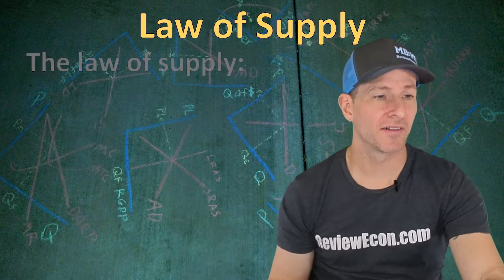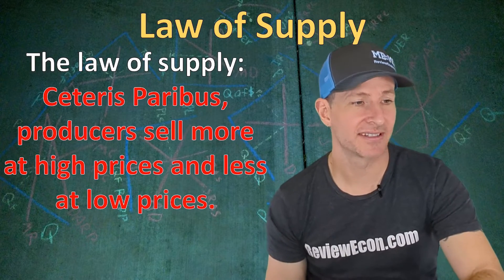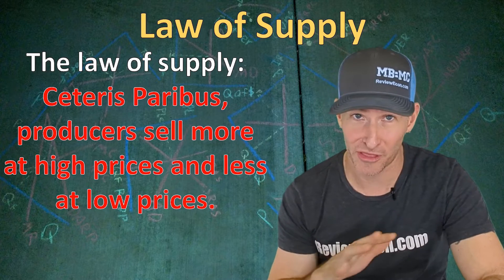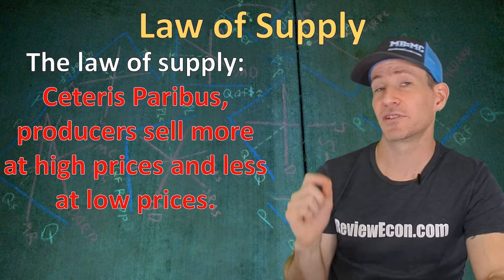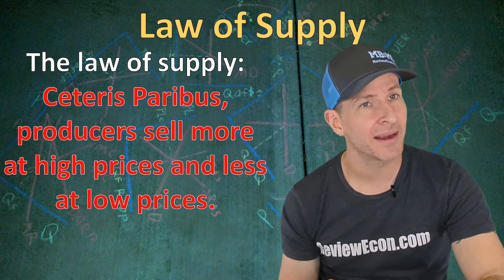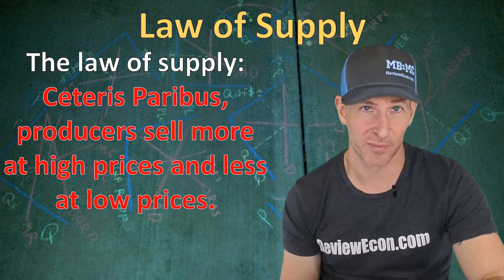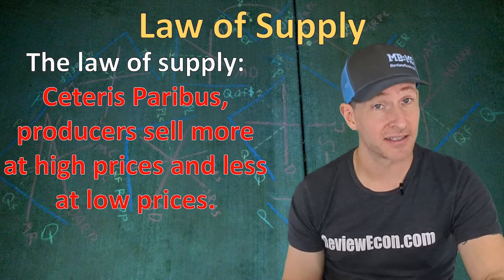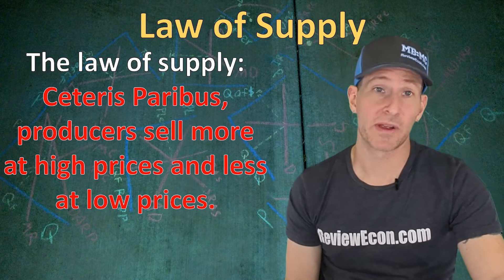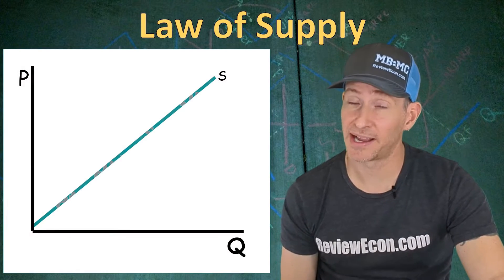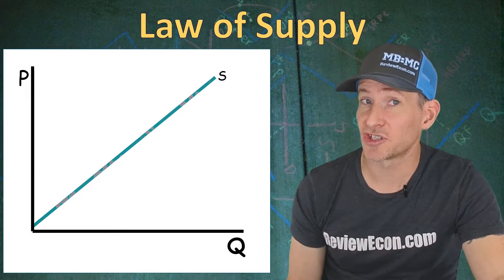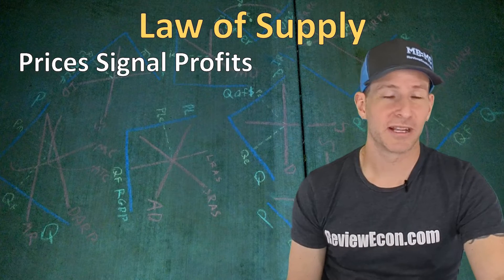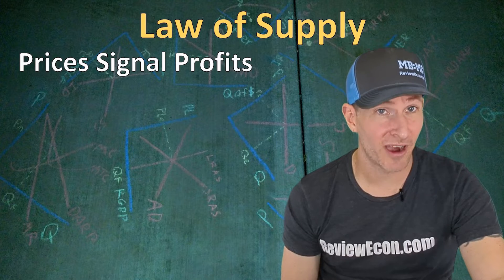The law of supply tells us that ceteris paribus — that means nothing else changes besides the price, other things are held constant — producers are going to sell more at high prices and less at low prices. This is the law of supply: a direct relationship between price and quantity supplied. When we graph it out, we have an upward sloping supply curve because of that direct relationship between price on the y-axis and quantity on the x-axis.